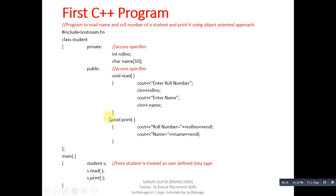The 'read' function uses cout to print 'enter roll number' on the console, then cin reads the roll number into the variable. Similarly, cout prints 'enter name' and cin reads it. The 'print' function uses cout to display roll number and name. Text in double quotes is printed as-is, while variable names print their values. 'endl' is similar to '\n' and moves the cursor to a new line. The class ends with a semicolon. Inside main, 'student s' creates s as an object of the class.